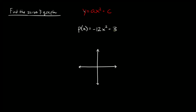The next form you're going to see is y is equal to x squared plus c. This plus or minus c at the end just tells you where the y-intercept is — wherever the parabola crosses the y-axis. The zeros are just wherever your parabola crosses the x-axis, so those are the three points we need to graph the parabola.